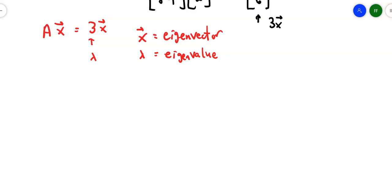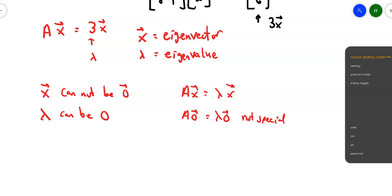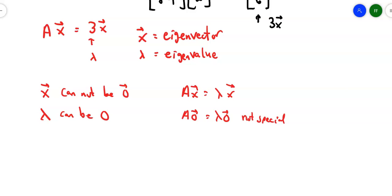A couple of things worth mentioning: that vector can't be the zero vector. Why? Because if you have A times x equals lambda times x, and x is the zero vector, then you're saying A times the zero vector equals lambda times the zero vector. It's not really special — multiply anything by the zero vector and you just get zero equals zero. On the other hand, lambda can be zero, but you can't have the eigenvector be zero. Sometimes we also refer to the vector as an eigenvector of the matrix that corresponds to lambda.